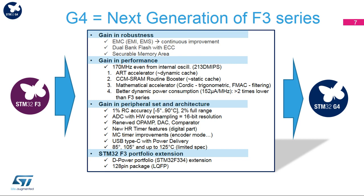The STM32G4 series is a follower of the STM32F3 family. Analog improvements are related to the number of embedded analog peripherals, including their higher analog performances. Regarding the digital improvements, the STM32G4 microcontroller is faster than the STM32F3 and includes new hardware accelerators like ART, CORDIC, and FMAC, and embeds improved digital peripherals.